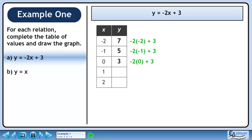If we multiply 0 by negative 2 and then add 3, we get 3. If we multiply 1 by negative 2 and then add 3, we get 1.